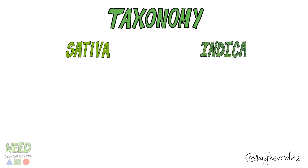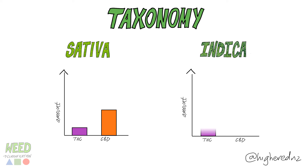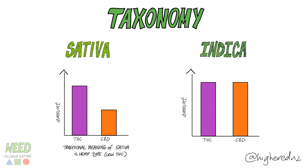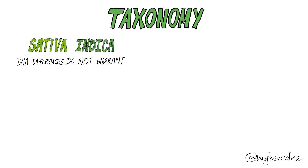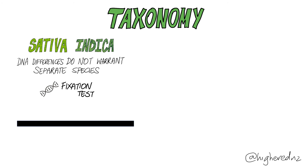Then we come to the difference in cannabinoid content. The original meaning of sativa was the hemp species — low THC and high CBD — while indica was the psychoactive species with high THC and high CBD. Nowadays we say sativa is high THC and low CBD, but the traditional meaning was hemp-type and low THC. Despite these differences, DNA evidence does not warrant separate species status for sativa and indica. This is based on fixation tests where the DNA comparison is scored from 0 to 1. A score above 0.35 is the threshold required for separate species. The score between European and Asian human populations — obviously the same species — is 0.156. Sativa and indica scored 0.229, indicating they are the same species.